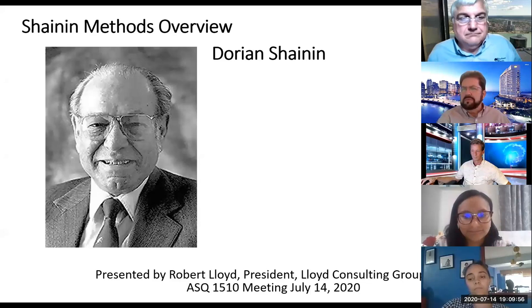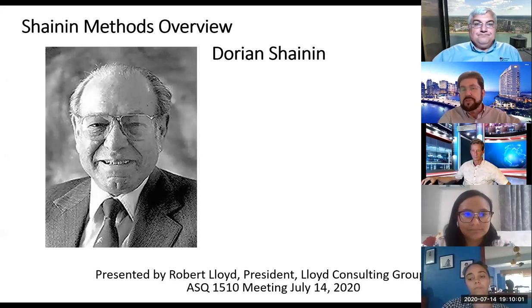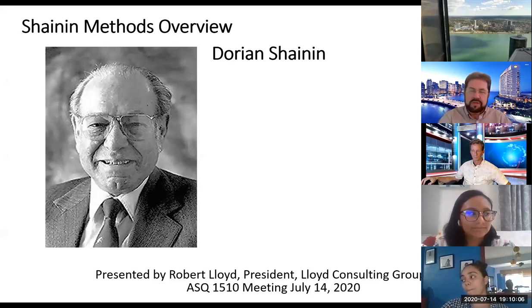And now, join me in welcoming Bob Lloyd. All right, so this is an overview, and I want to stress that — it's like trying to teach Six Sigma in 50 minutes, so we're going to go through this fairly quickly. Quick background on Dorian Shannon: as Phil mentioned, he was one of the ASQ founders, became an ASQ fellow in 1949, executive secretary, and first winner of the four medals.